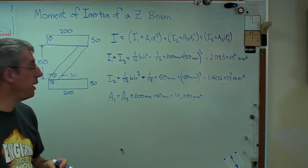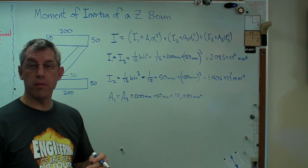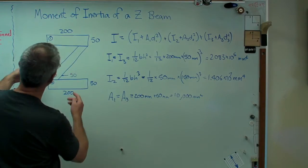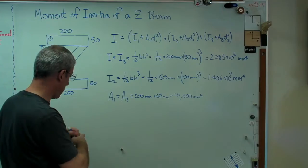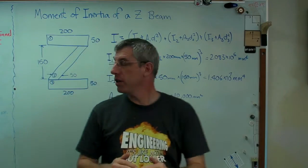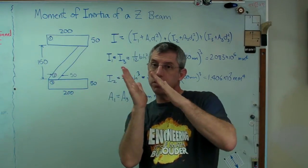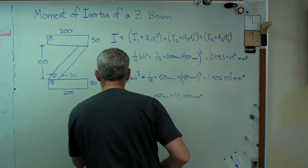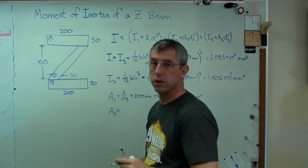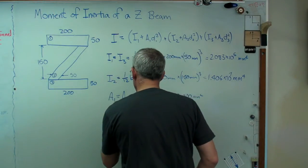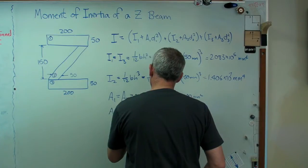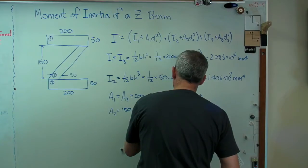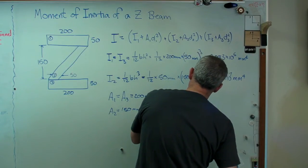And again, A2 is the same as you'd get for a rectangle that has 50 millimeters in width and 150 millimeters in height. Because again, you can think of it as a bunch of little slices, and the slices have just been skewed over. They didn't change the size of them any. So A2 equals 150 millimeters times 50 millimeters. And that's going to be 7,500 millimeters squared.